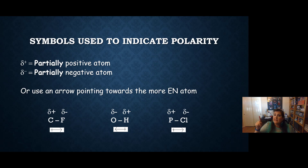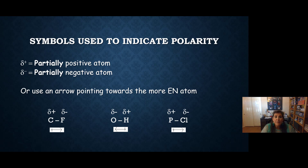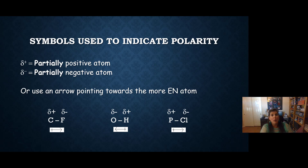Symbols used to indicate polarity: delta-plus indicates the partially positive atom, and delta-minus indicates the partially negative atom. We can also use a polarity arrow pointing towards the more electronegative atom — that's the one closer to fluorine. For example, in a C-F bond, F is closer to fluorine, so it's a little bit negative and C is a little bit positive. The arrow points towards the F. In the O-H bond, O is closer to fluorine — right next to it — so O pulls the electrons closer. O is a little bit negative, H is a little bit positive, and the arrow points towards the O.